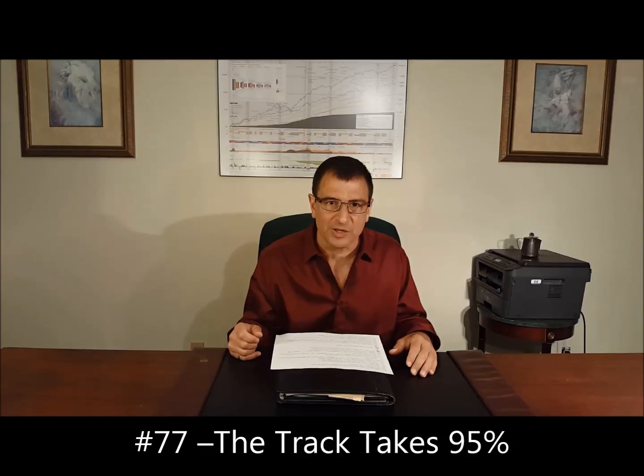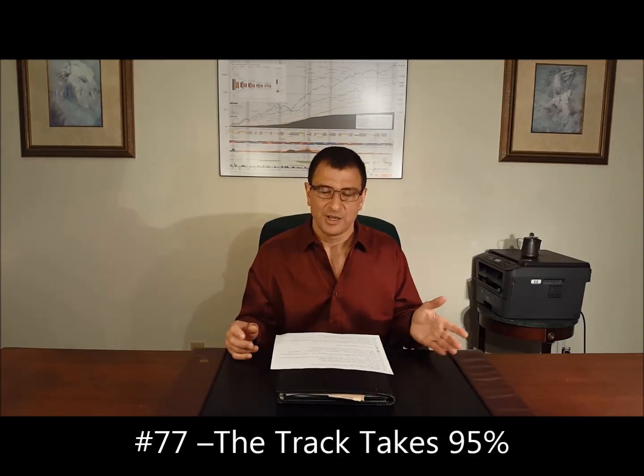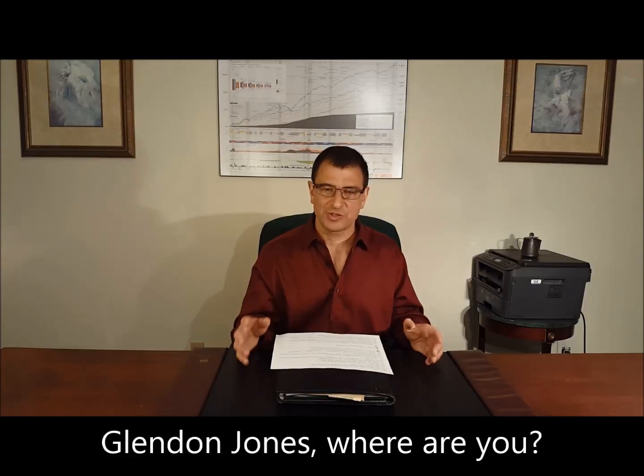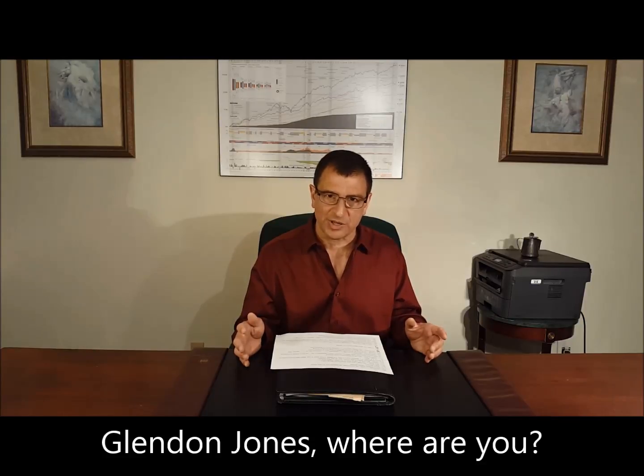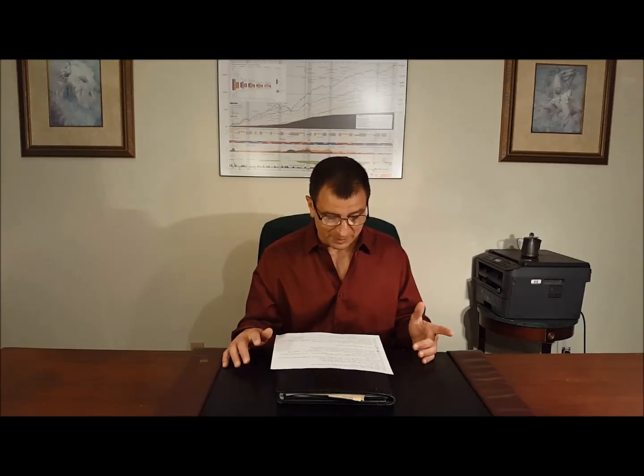77 comes from a buddy of mine who wrote the book on horse racing logic, which is the track takes 95% of the money. So Glenn Jones wrote the book, Horse Racing Logic. First thing to remember is track takes 95% of the money. So if you're playing the ponies, keep that in mind, which leads into 78.